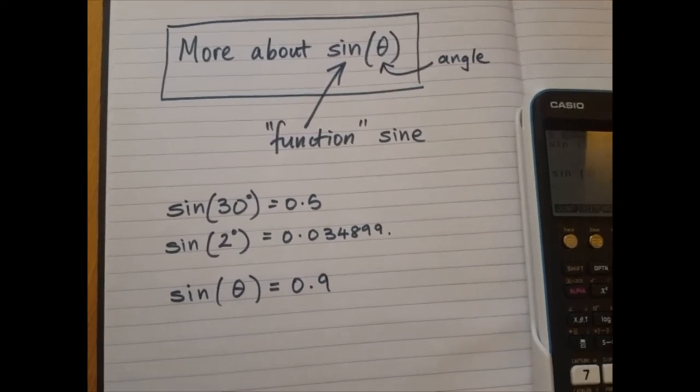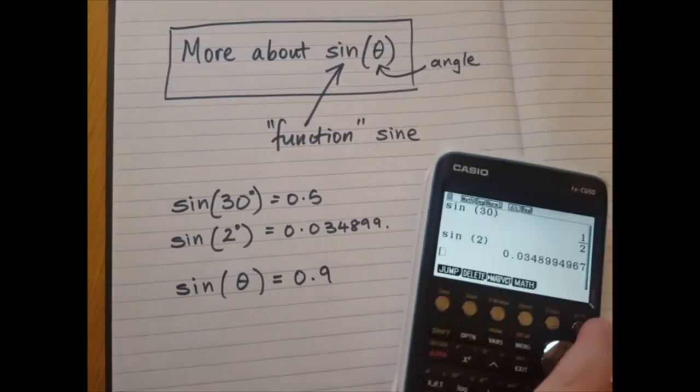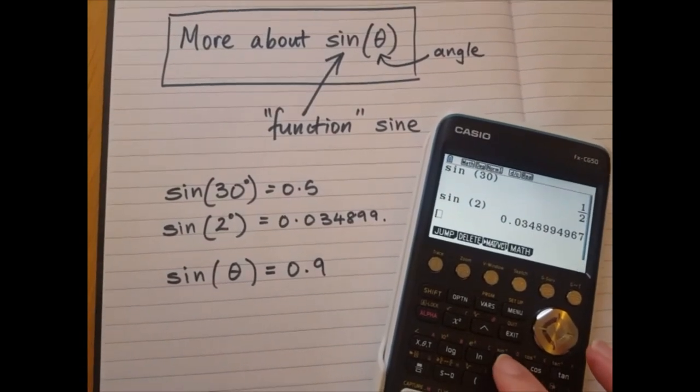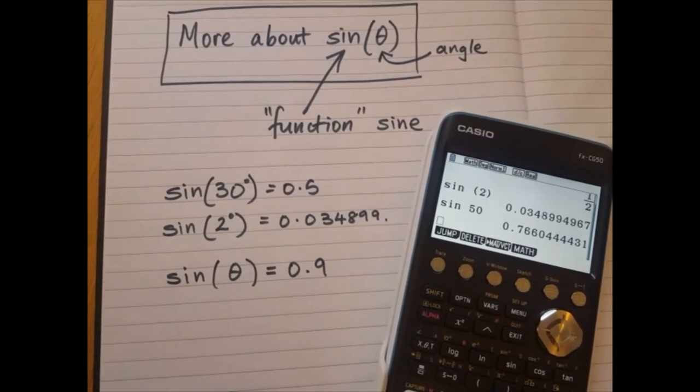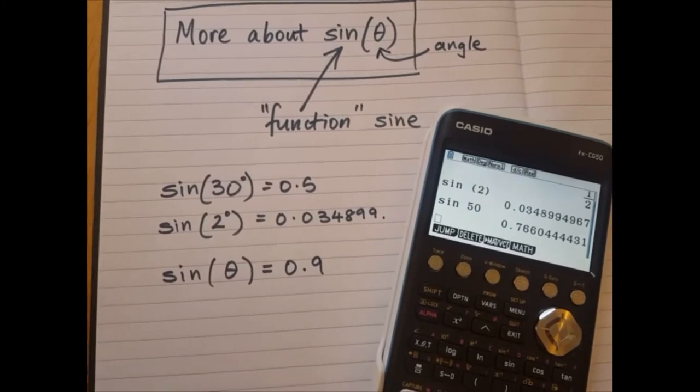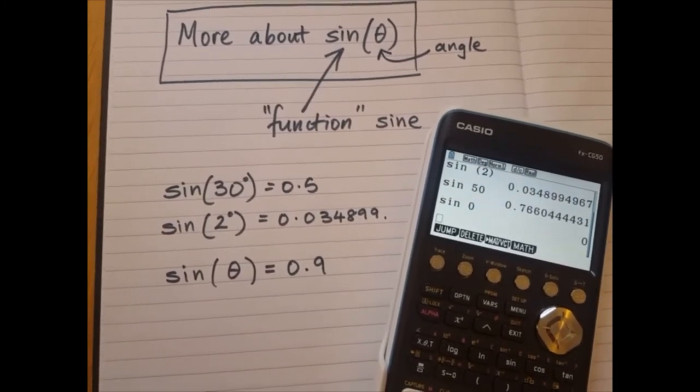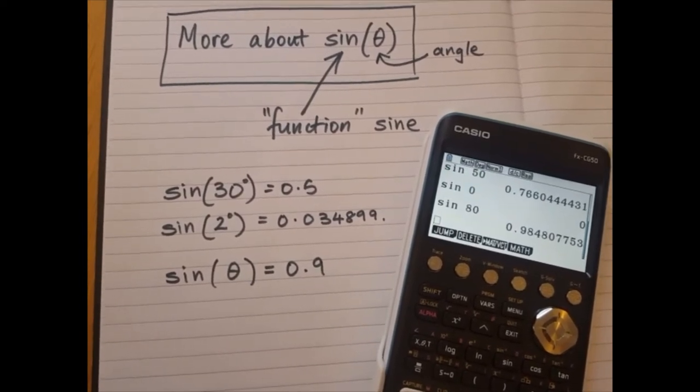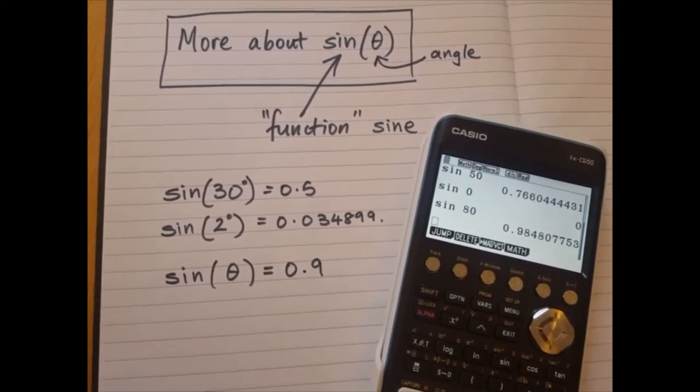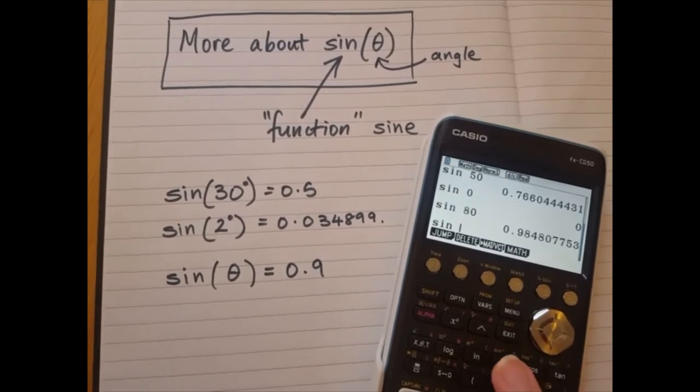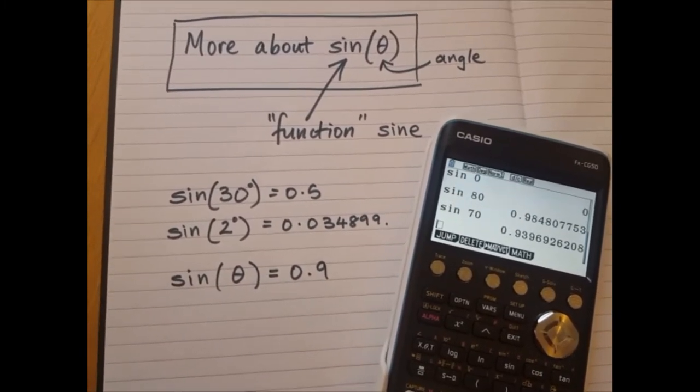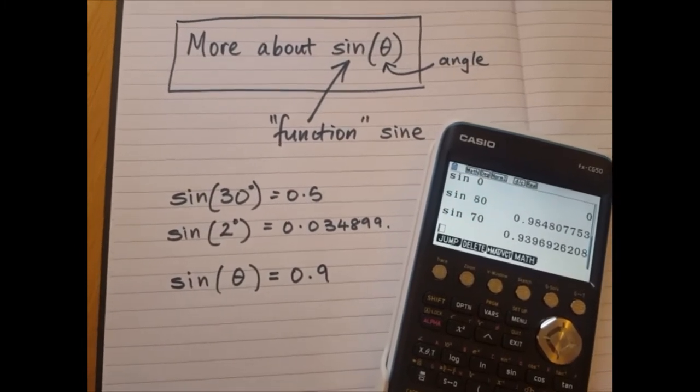Now, obviously you could do it by trial and improvement. You could think, let's see, maybe it's sine 50 degrees. No, too small. Maybe it's sine 80 degrees. Ah, too big. Sine, let's go down a bit. 70? Still too big. So as you can see, this is very tedious.